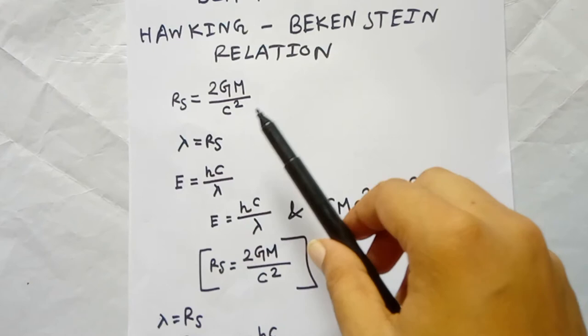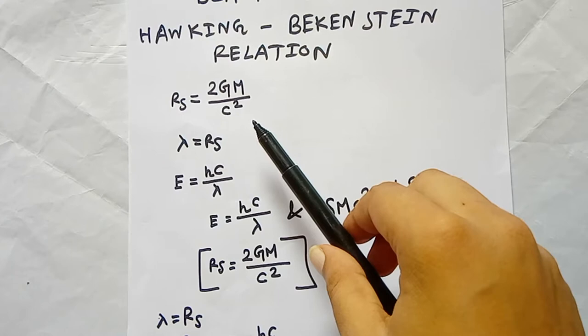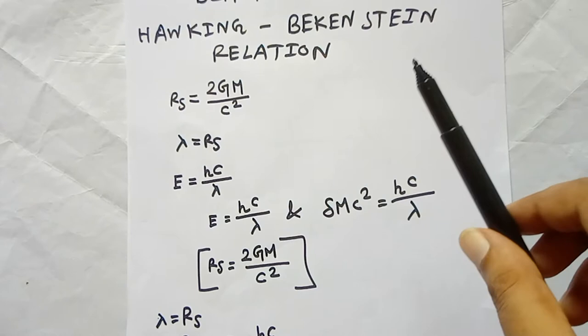In physics, if the wavelength of light is greater than the Schwarzschild radius, then the light will be bent by the black hole. When the wavelength of light is less than or equal to the Schwarzschild radius, the light will be absorbed by the black hole. We know that no light escapes from a black hole.